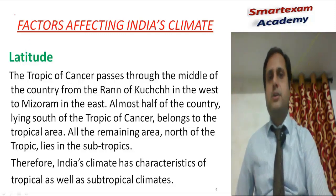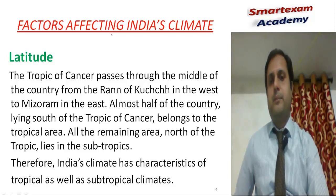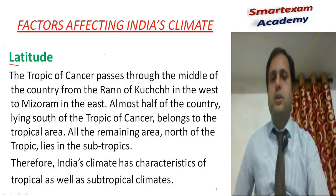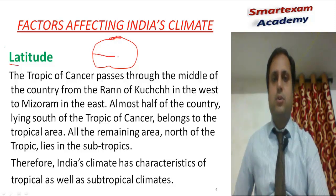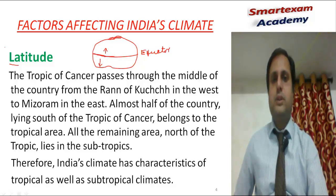Now let's understand the factors which affect the climate of India. Indian climate is a monsoon type climate, but the latitude of India affects the climate in various aspects. If we talk about the globe, the zero degree latitude means the equator. As we move away from the equator — either in the northern or southern side — the temperature decreases. India receives the largest heat at the equator.